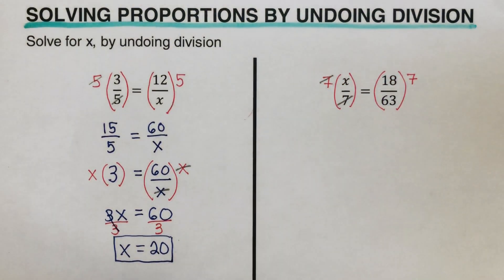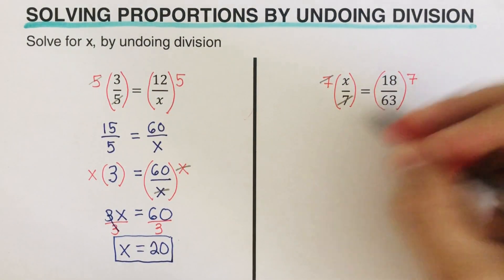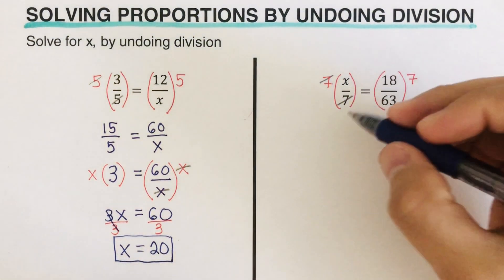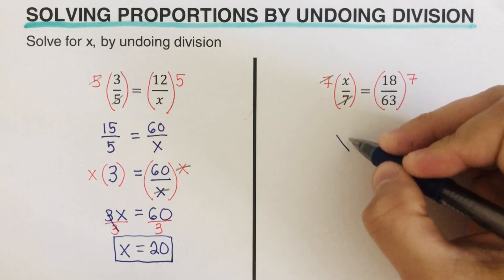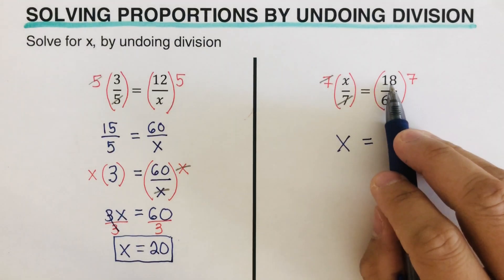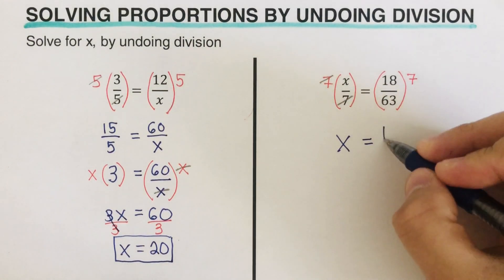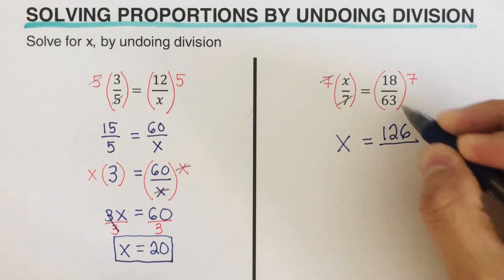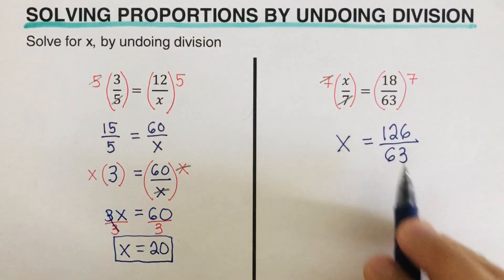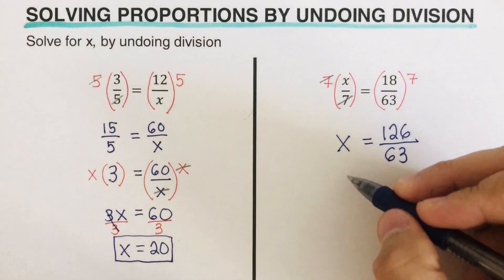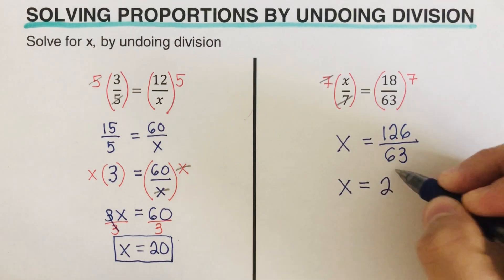Crossing the 7 out on the left side, we are left with just x. On the right side, 18 times 7 is 126, over 63. Dividing 126 by 63 gives x equal to 2.